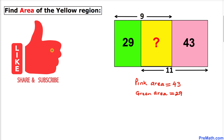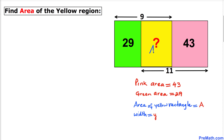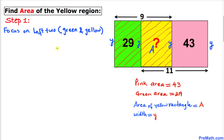Please don't forget to give a thumbs up and subscribe. Let's go ahead and get started with the solution. Our very first step: let's assume that the area of this yellow rectangle is A, and the width of this rectangle is y. If this side is y, then this side is going to be y as well, and likewise y over here and y over here.